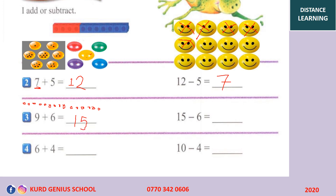And this one is the subtraction — we subtract 6 from 15: 15 minus 6. We draw 15 circles: 1 through 15. This time we cross out 6 of them — 1, 2, 3, 4, 5, and 6. Now let's count how many are left: 1, 2, 3, 4, 5, 6, 7, 8, 9. Which means 15 minus 6 equals 9.